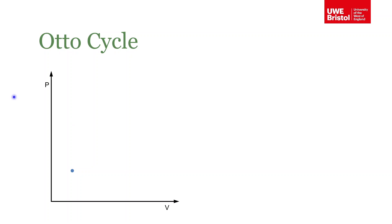What I've got on the screen here is a pressure-volume plot, with pressure on the y-axis and volume on the x-axis. I'm going to show you each of the different strokes of an internal combustion engine and see how they relate to the changes in pressure and volume as we go around the cycle. We're starting off in the bottom left-hand corner of this plot, so low pressure and a small volume.